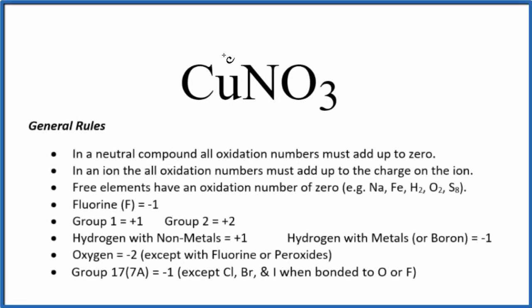To find the oxidation numbers for the copper here in copper 1 nitrate, we'll use these rules here. First off, there's no negative or positive sign after the copper 1 nitrate, and because of that it's a neutral compound. All the oxidation numbers are going to add up to zero.